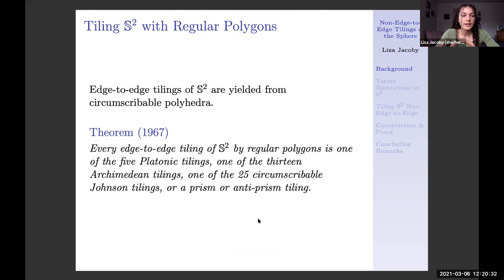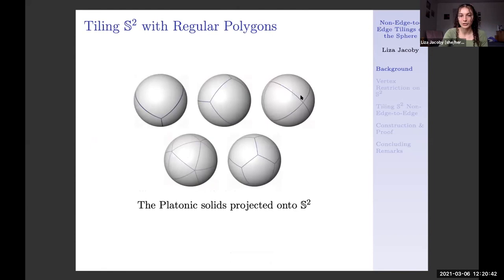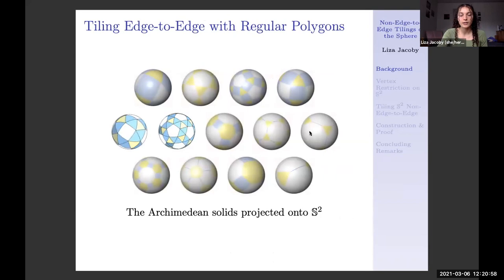If we're given one of these circumscribable polyhedra, we can project the edges and vertices onto the circumscribing sphere, and that yields the tilings. Here are the Platonic tilings — the tetrahedron, hexahedron, octahedron, icosahedron, and dodecahedron, where we projected the edges and vertices out onto S2. Then we have the Archimedean tilings where we do the same thing with the Archimedean solids and project onto the sphere. The 25 Johnson solids and the prisms and anti-prisms complete the list.